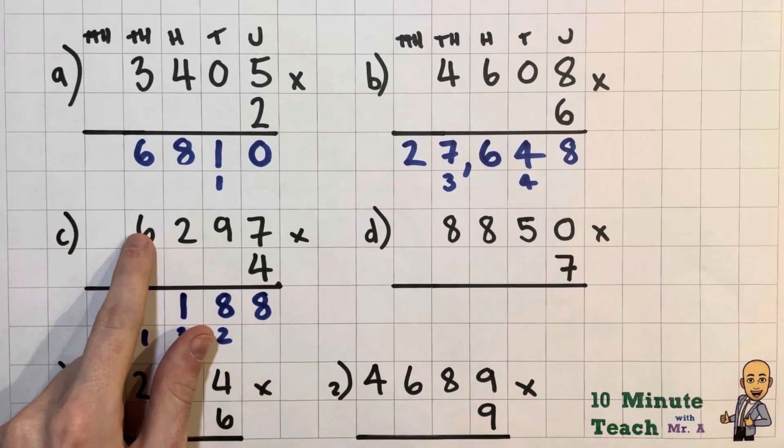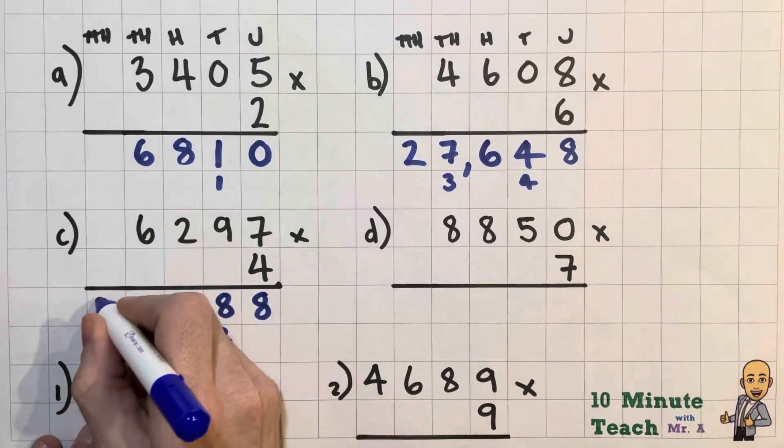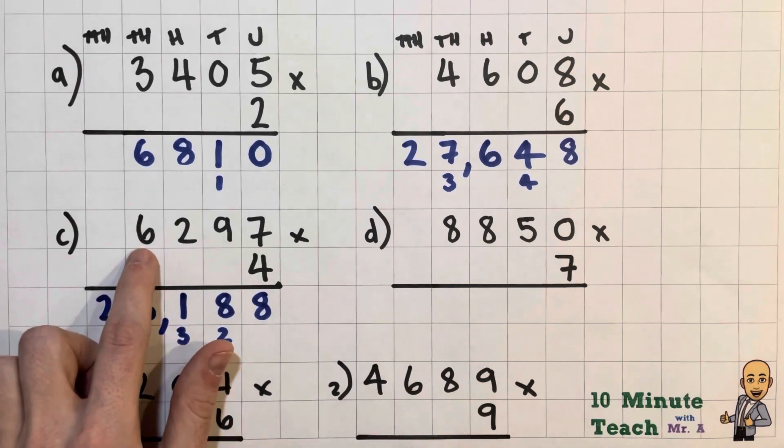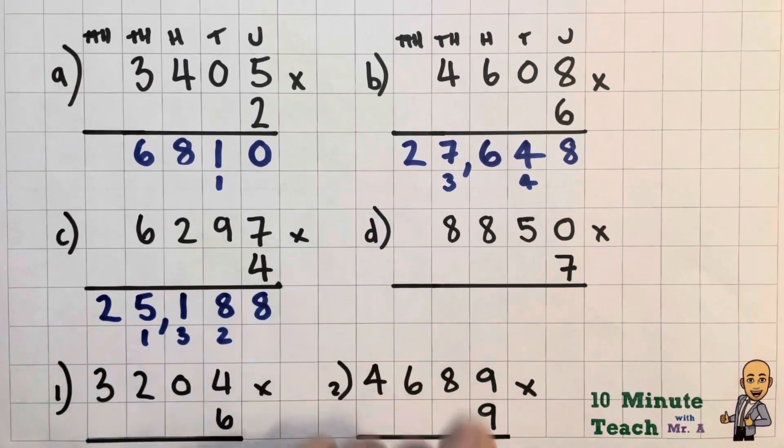Okay, 6 times 4 here is 24, 24,000 actually because it's in the thousands column. So 24,000 add another 1000 is 25,000. So the answer to 6297 multiplied by 4 is 25,188.